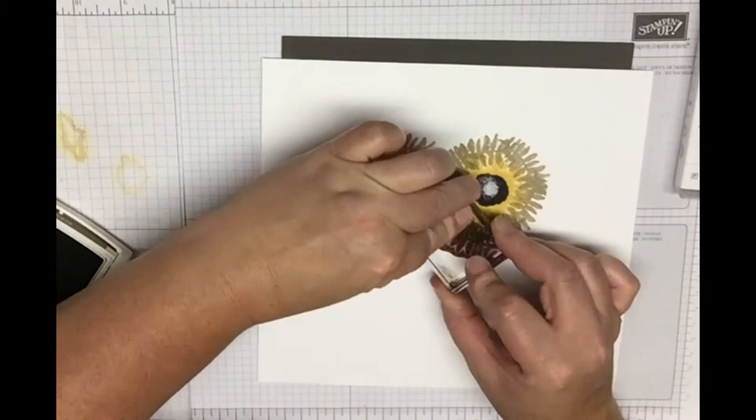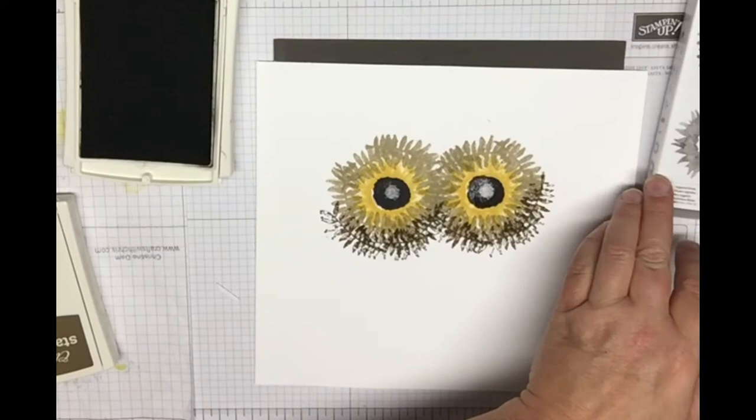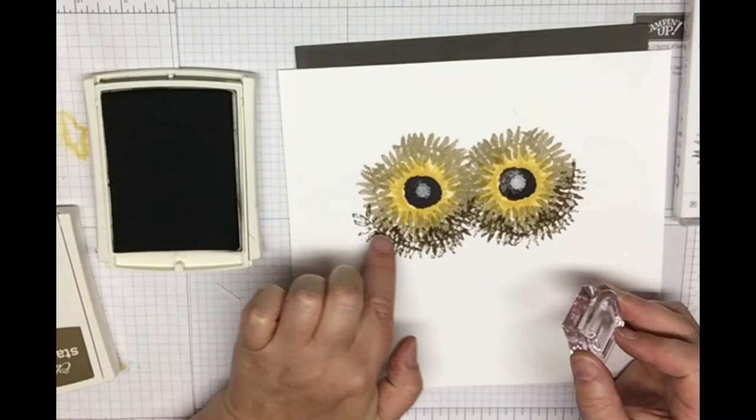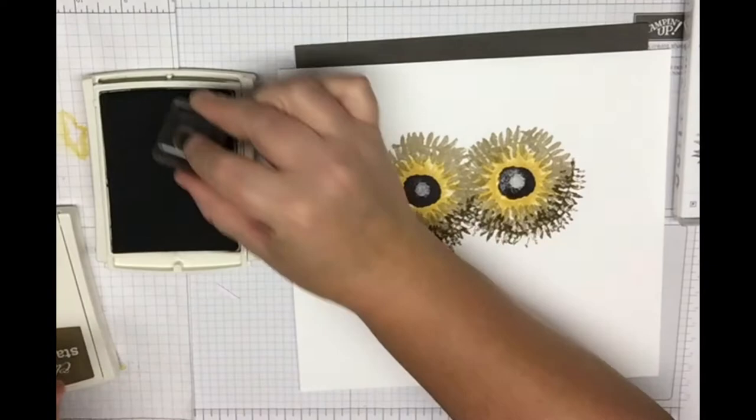The next step is the acorn. The bottom of the acorn, you're going to take the bottom and we're going to use Basic Gray. You're just going to ink this all along the line. If you can see the line from your fern, just stamp this real close just along the bottom following that line.